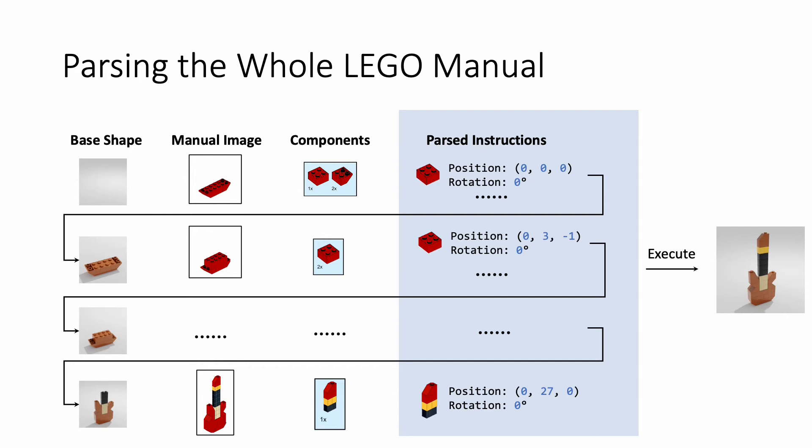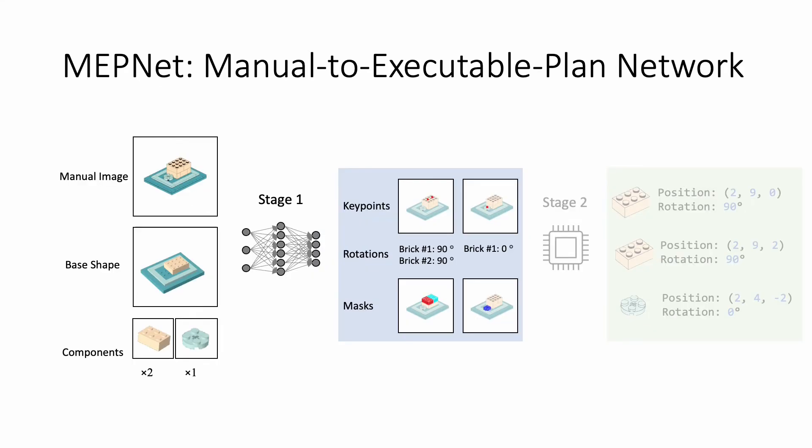Since we have factorized the problem into a sequential manual parsing problem, we will be focusing on developing learning-based methods for solving the one-step prediction task. Our proposed model, Manual to Executable Plan Network, or MEPNet, tackles the problem in a two-stage fashion.